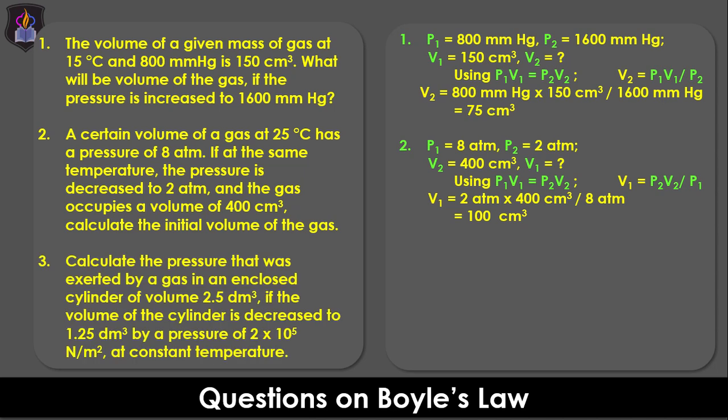Question 3: Calculate the pressure that was exerted by a gas in an enclosed cylinder of volume 2.5 dm³ if the volume of the cylinder is decreased to 1.25 dm³ by pressure of 2 × 10⁵ N/m² at constant temperature.